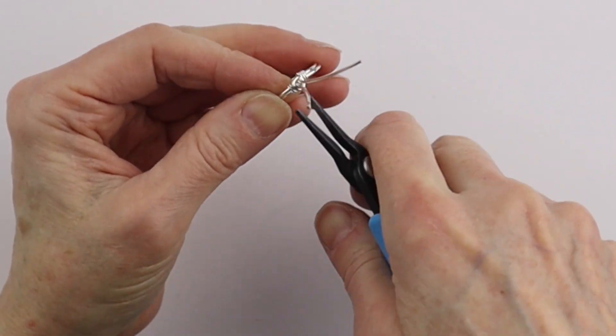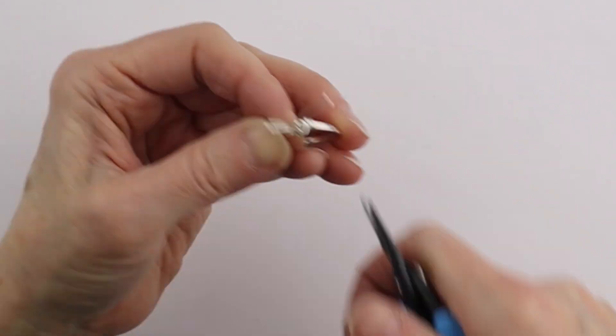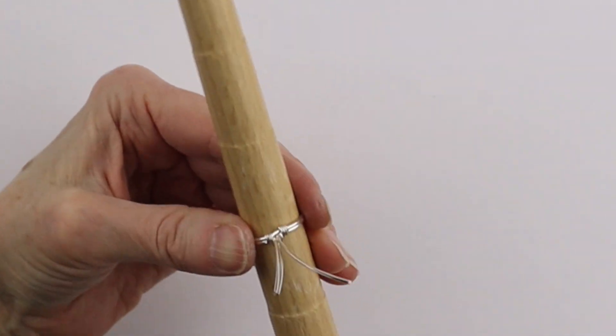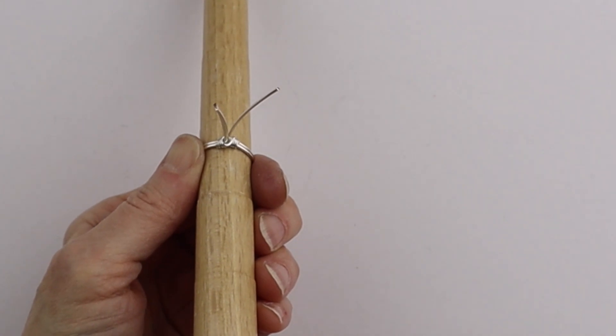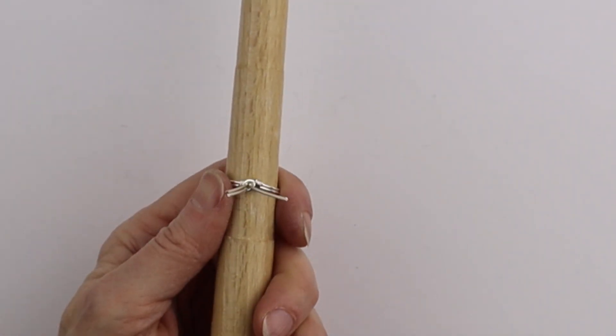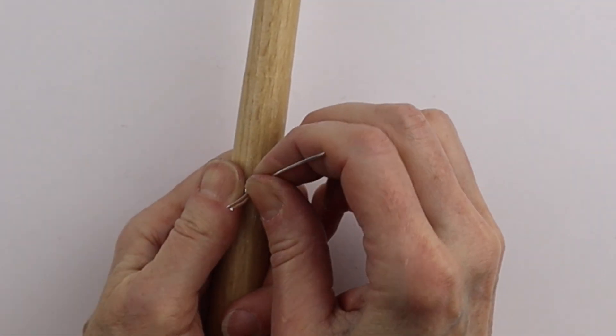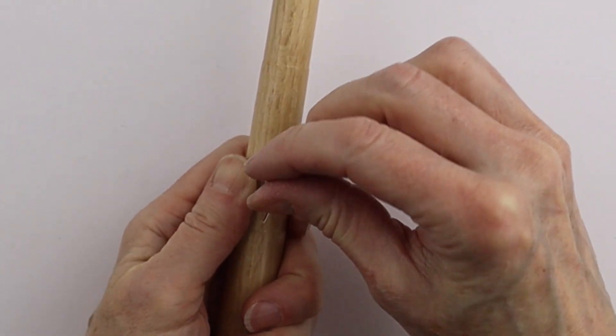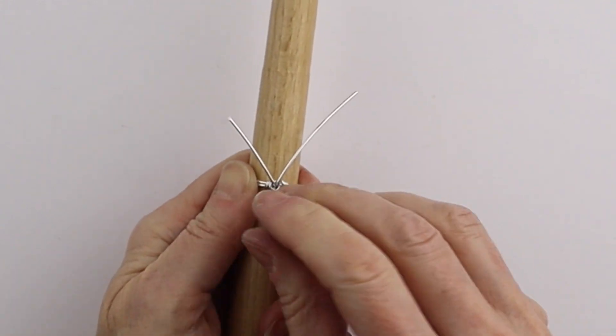The ends are on top, not underneath where the finger is, and then also you can push these in so they're more discreet. So now we're going to push it back on the ring cone.